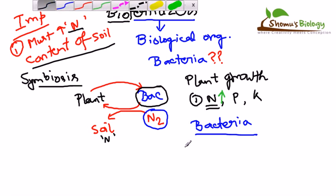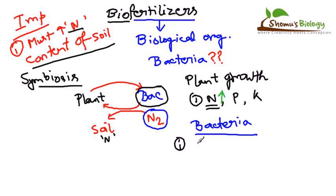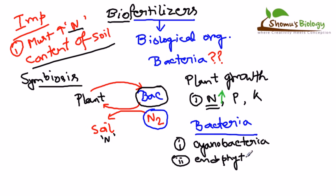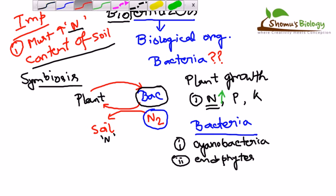Among nitrogen-fixing organisms, our first example is cyanobacteria — a type of bacteria which can fix nitrogen. There are also endophytic bacteria, which are another major type. Plants that have nitrogen-fixing bacteria in their root or rhizosphere region are called leguminous plants.